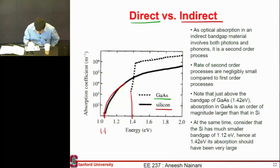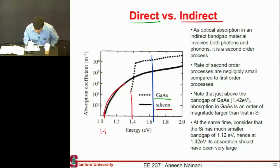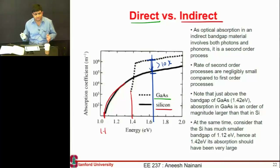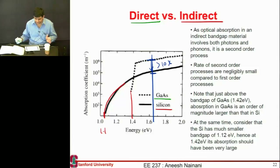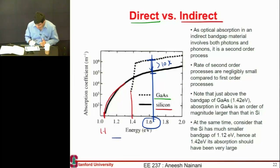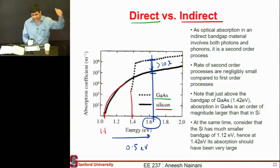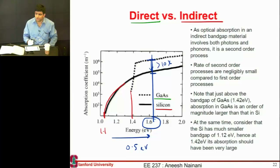If I take the case of a photon with an energy of 1.6 or 1.7 electron volts, gallium arsenide has more than an order of magnitude higher absorption coefficient compared to silicon — more than 10x higher — meaning that photon will get absorbed in 10x less material length. And this photon at 1.6 eV is already 0.5 eV above the band gap of silicon, yet it still has a much lower absorption coefficient in silicon than in the direct band gap material.